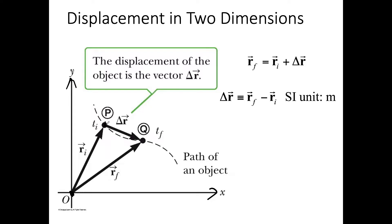We get points in this coordinate system — for example, point P and point Q. Point P has an x-coordinate xp and a y-coordinate yp. These xp and yp together tell us where this point is in the coordinate system. Similarly, we have point Q. A motion in two dimensions is one object that changes its position from one coordinate to another in the coordinate system.